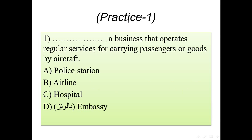Practice number one: blank — a business that operates regular services for carrying passengers or goods by aircraft or plane. Options: A) police station, B) airline, C) hospital, D) embassy. The right vocabulary is 'airline', because only an airline operates regular services for carrying passengers and supplies from one place to another by aircraft or plane.